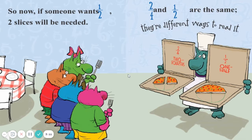Two fourths and one half are the same? Well, from what I could see here, these are both whole pizzas. This one was cut in half, and one half is left. This one was cut in fourths, and two fourths was left. So as you can see, they're both halves — this one was just cut in two.